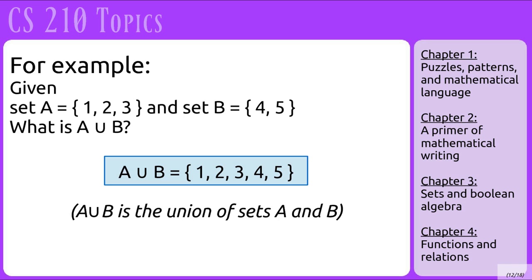For example, let's say we have set A containing 1, 2, and 3 as its elements, and set B containing 4 and 5. What is A union B? Union means we're going to put all of the elements from both sets into one set. So we end up with 1, 2, 3, 4, and 5 in a single set. That is A union B.